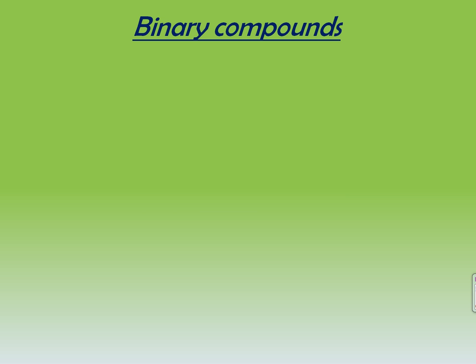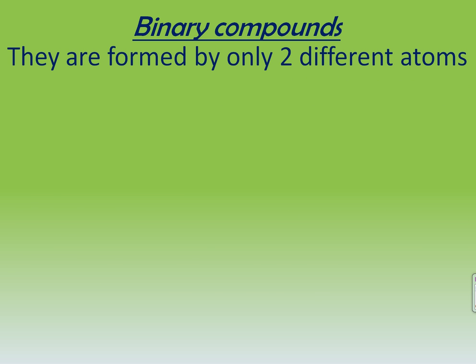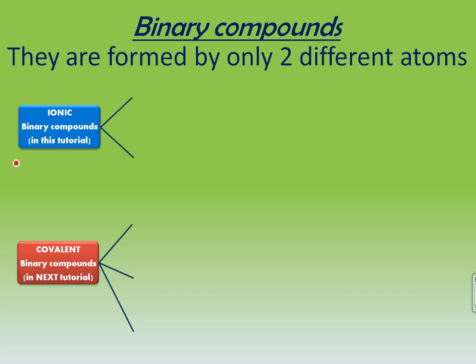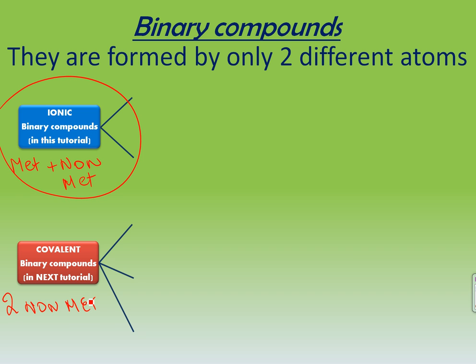Binary compounds are formed by two elements, and that's why they're called binary — because there are only two elements in the formula. These elements can be ionic when we have a non-metal bonding to a metal. And if not, we are going to have covalent when they are two non-metals bonding together. The ionic binary compounds are going to be the ones covered in this tutorial. The next tutorial is going to be the covalent one.